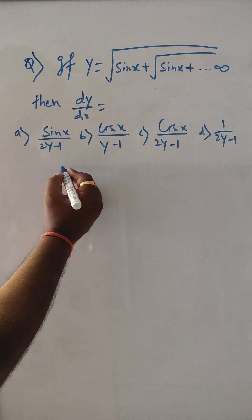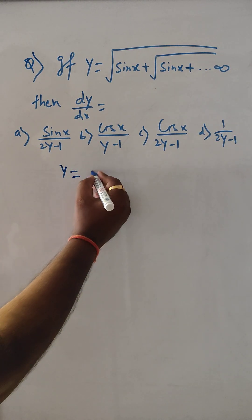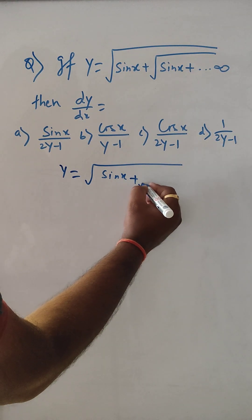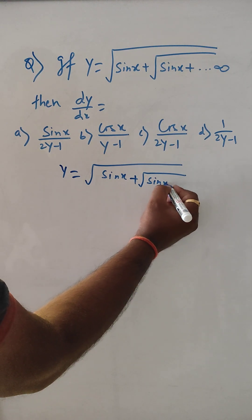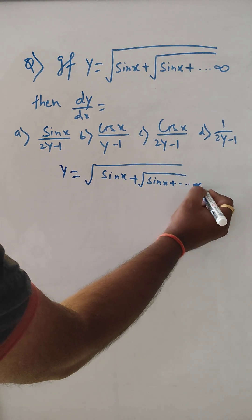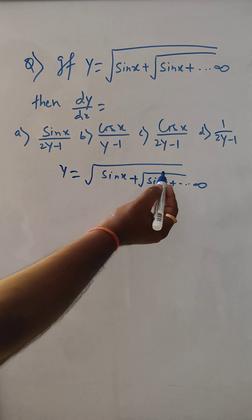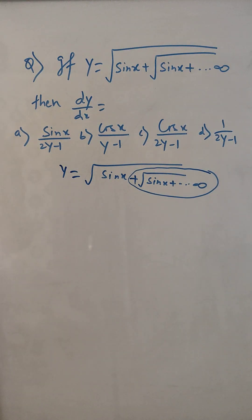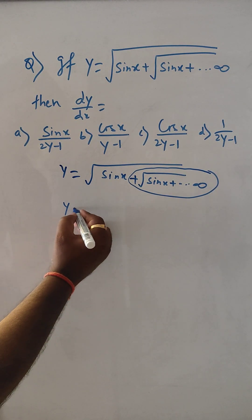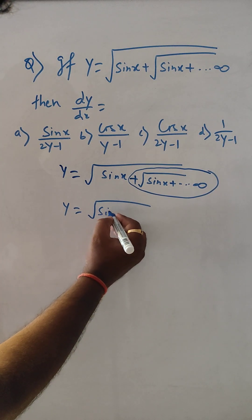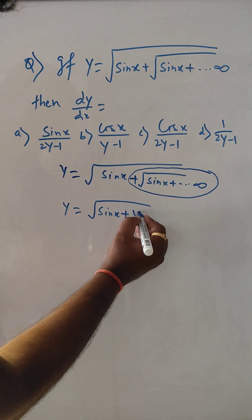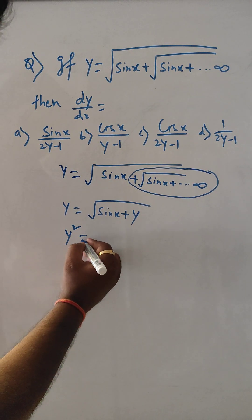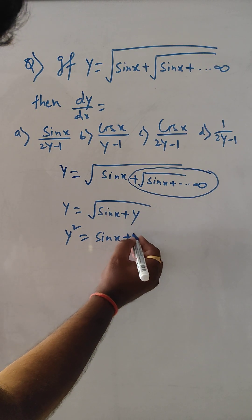So what we have actually is y is equal to under root sin x plus again under root sin x, like this to infinity times. In this case, what we do is we can take this much as y. So y is equal to under root sin x plus y. Then we do squaring both sides, then it is y squared equals sin x plus y.